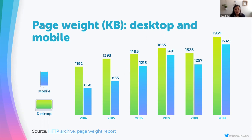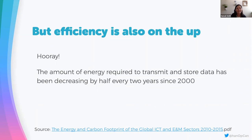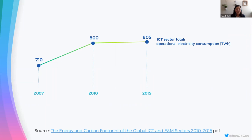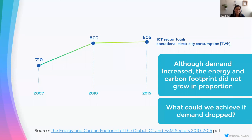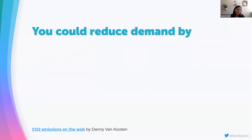Here's some good news - efficiency is definitely on the up. There have been remarkable improvements in the amount of energy required to transmit and store data, decreasing by half every two years since 2007. Between 2010 and 2015, even though demand massively skyrocketed, the amount of energy used was flattening out. But imagine what we could do if we actually reduced demand - we could make big differences to the amount of energy used by tech.